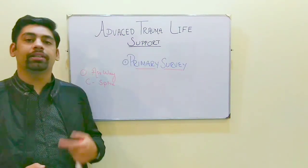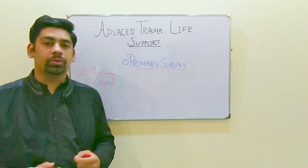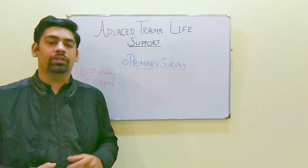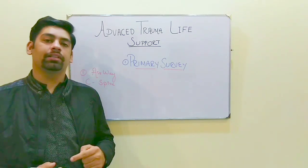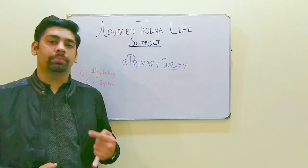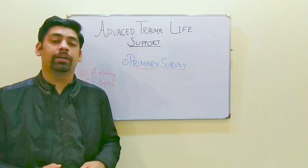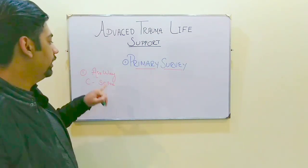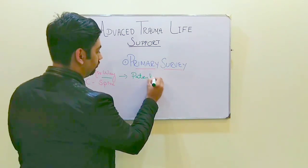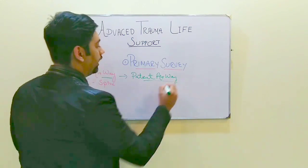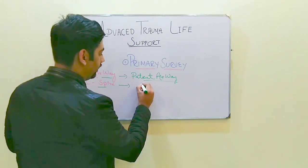The first component of the primary survey is the airway and the cervical spine. In this component, we look for the patency of the airway, clear the airway of any mucus or debris, and look for any blockage of the trachea which can hamper breathing. We also immobilize the cervical spine, which helps protect the spinal cord and prevents any type of plegia the patient might suffer if the cervical spine is not immobilized.